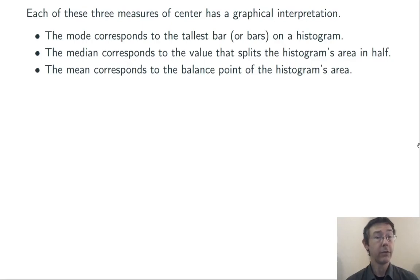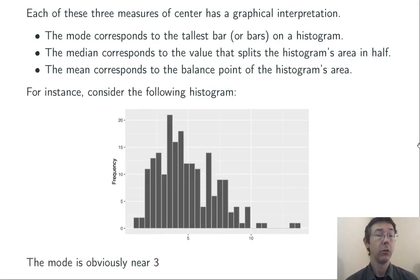Each measure of center has a graphical interpretation, in particular when we look at a histogram. The mode is going to be the highest point on the histogram. The median is going to be the value that splits the histogram in half, and the mean is going to be the value that would allow the histogram to balance. Let's do an example to see what I'm talking about. So here's the histogram. The mode is going to be the x value where the histogram is tallest, so that's right around 3 in this case, maybe a little tiny bit bigger than 3.